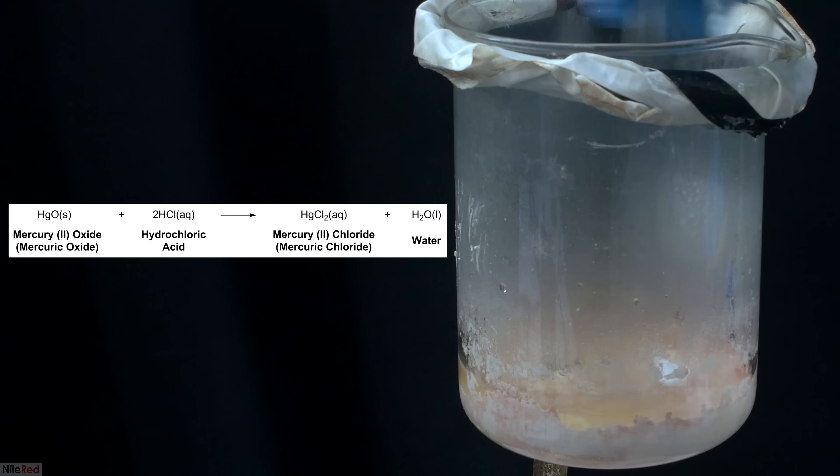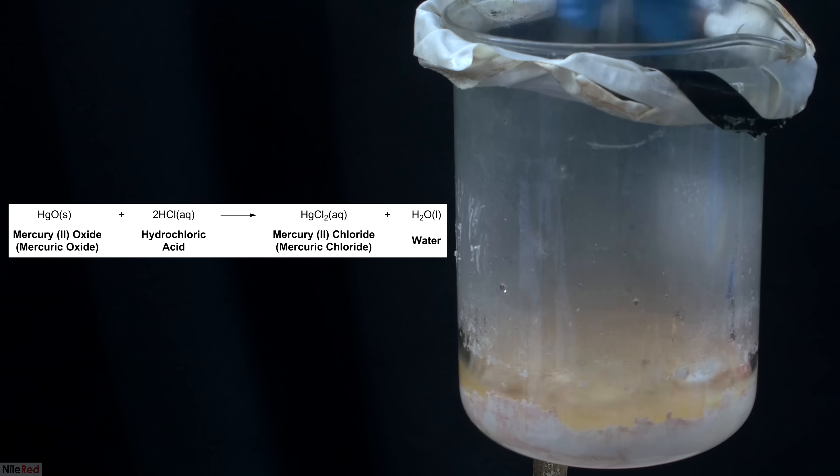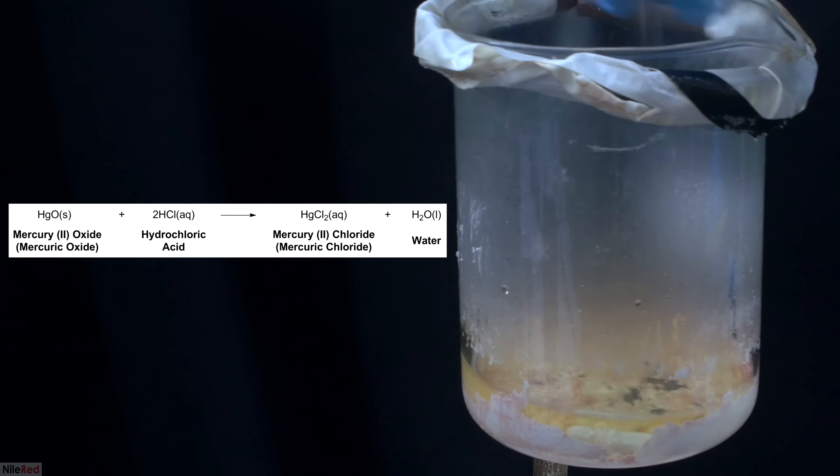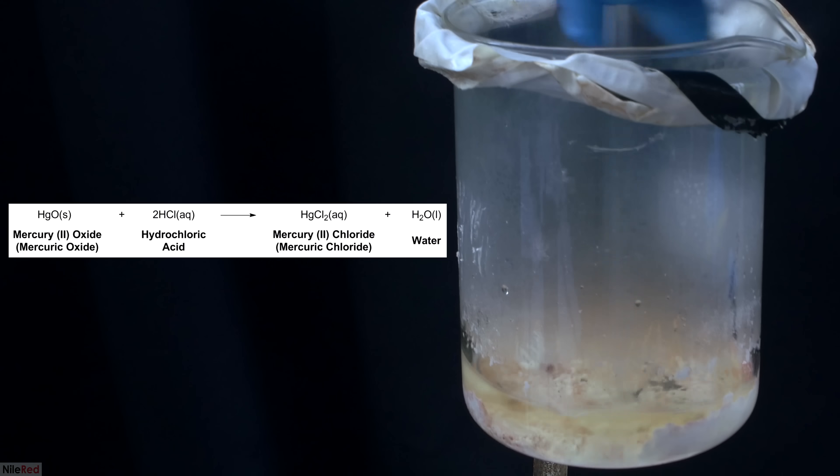After all of the hydrochloric acid is added, I mix things as well as I can using a stir rod, but it's expected that not everything will dissolve. The solution actually takes on a very slight yellow color due to the presence of a little bit of nitrogen dioxide gas.